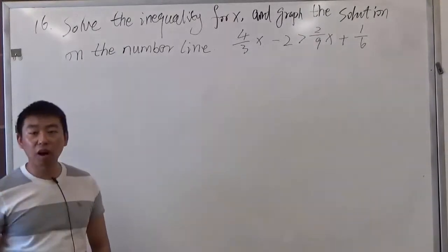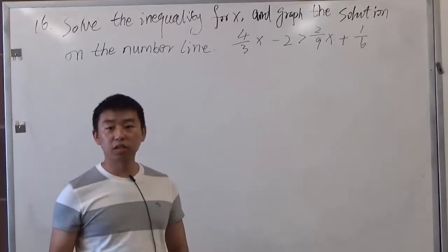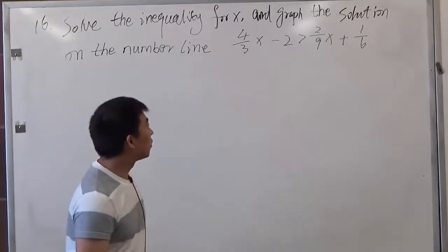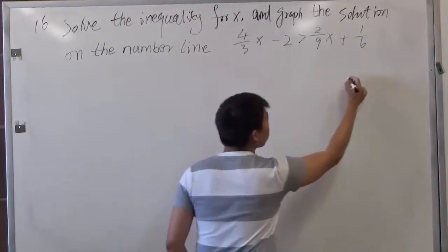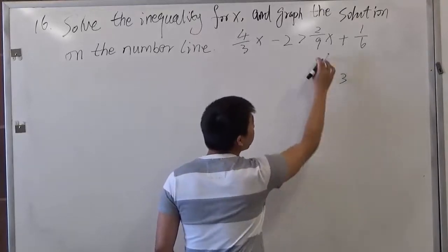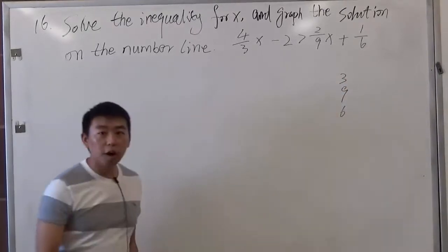As you can see, we have fractions in this inequality. When you have fractions in the inequality, the key to solve is finding the LCD. So here, we're going to look at the denominators. We have 3, we have 9, and we also have 6. We have 3 denominators here.